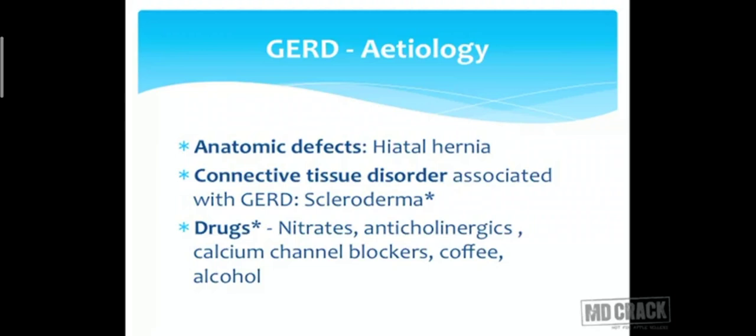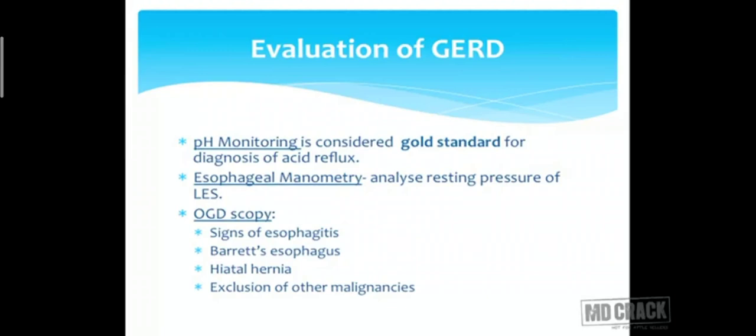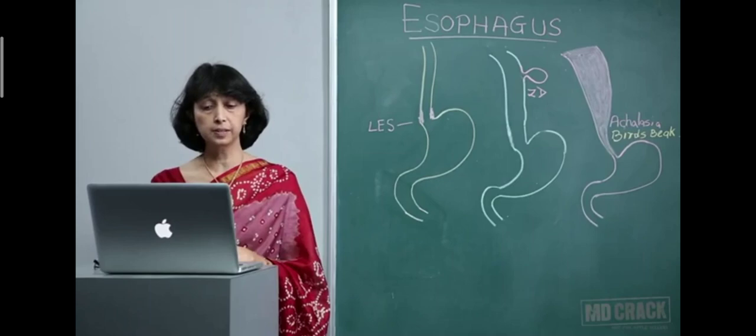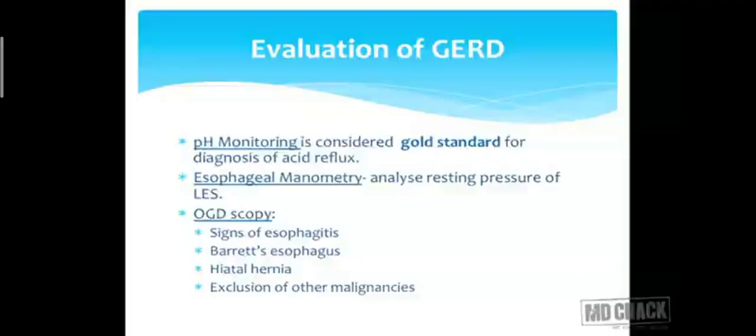To evaluate GERD, you must monitor the pH — that is the gold standard for diagnosis. You can also do esophageal manometry to analyze the resting pressure at the sphincter; if pressure is low, reflux is occurring. Gastroscopy or OGD scopy can directly visualize signs of esophagitis, Barrett's esophagus, hiatus hernia — either sliding or para-esophageal — and can also exclude other disorders like malignancies.